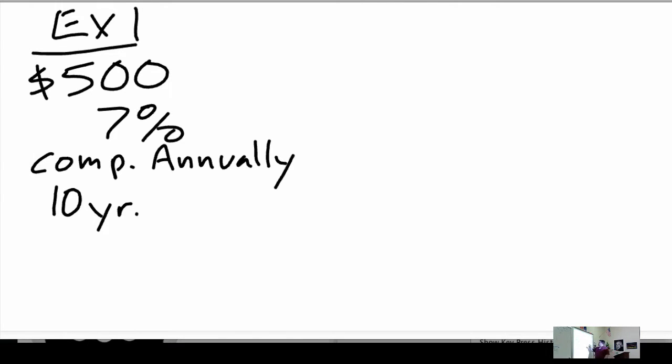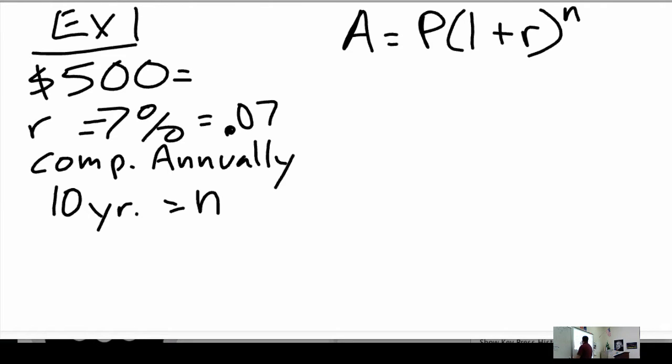So, I'm going to say A equals P(1 plus the rate) raised to the N, where N was the number of years. Right? So, this is N. This is .07, which is the rate. And this is the principal amount. And they're asking us, what is the final amount?